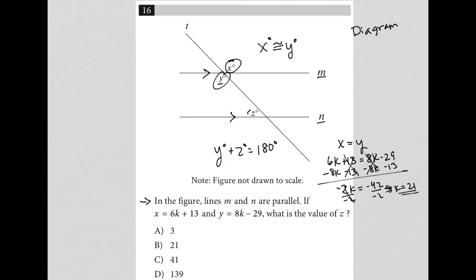What is the value of z? If k equals 21, and I know that y plus z equals 180, and y is 8k minus 29, then I would say 8k minus 29 plus z equals 180. I'm replacing y with what we were told y equals.